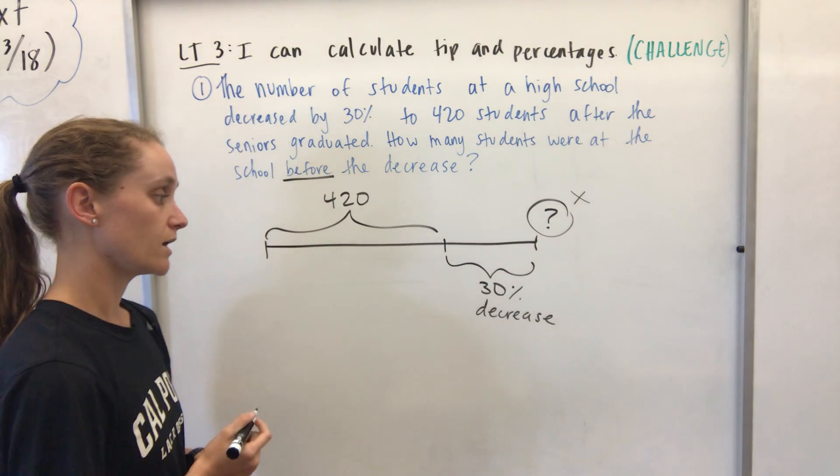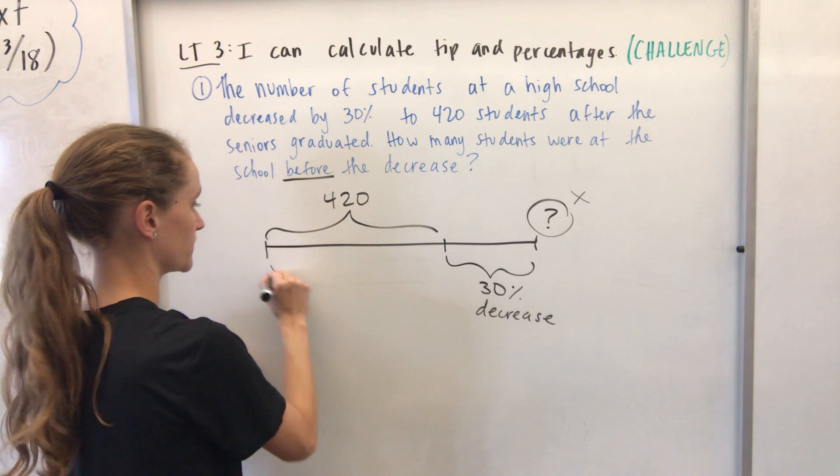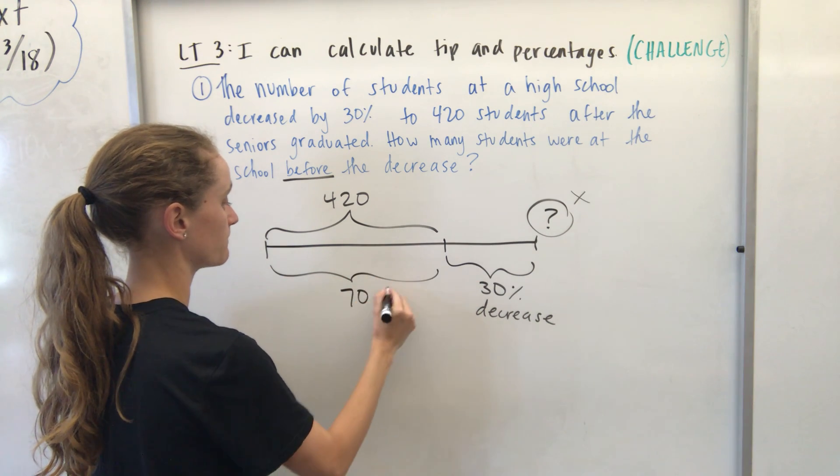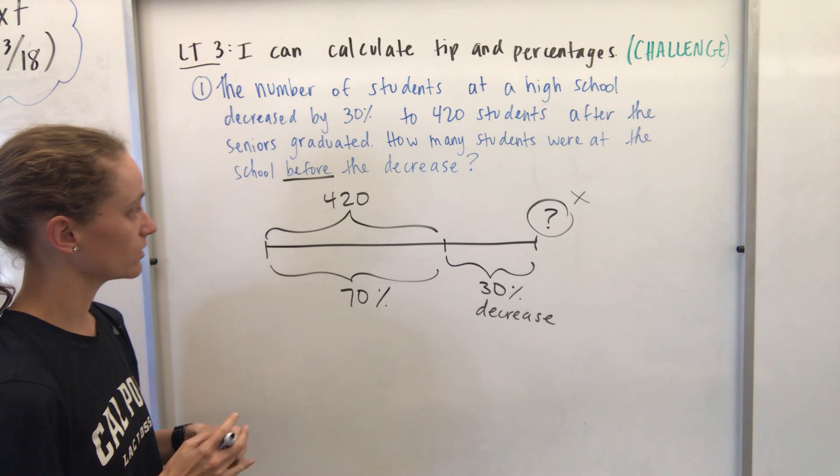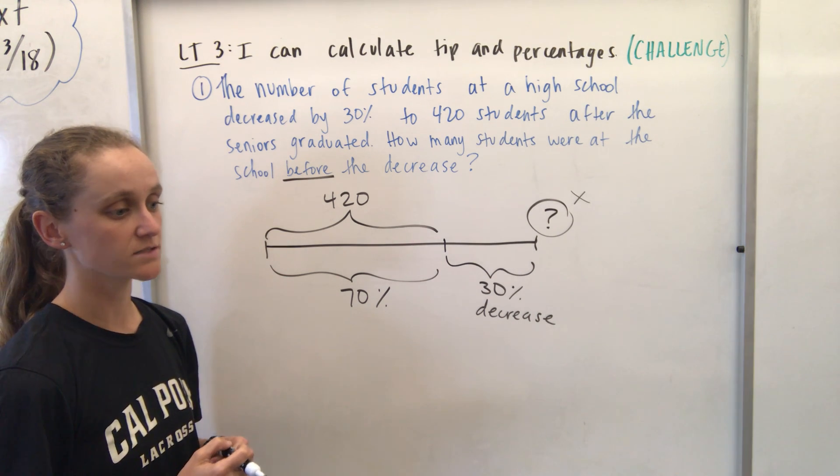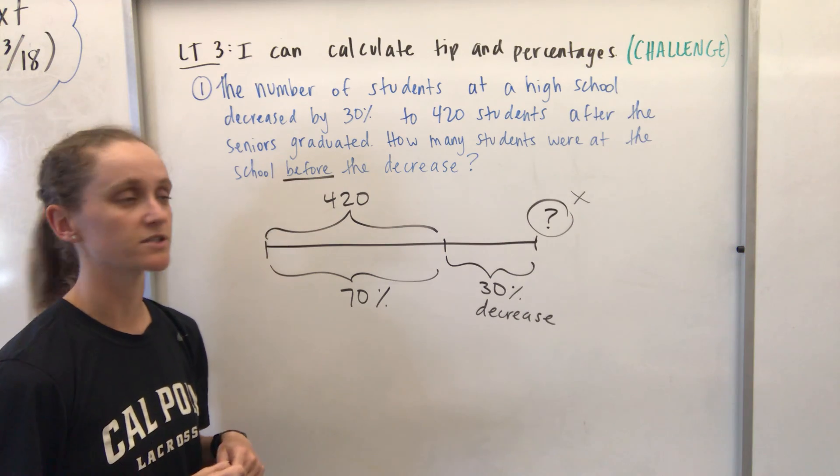Okay. Well, if this was a 30% decrease, this number must be 70%. And so we're going to use that equation we've been using for discounts, percentages, or for percent change.